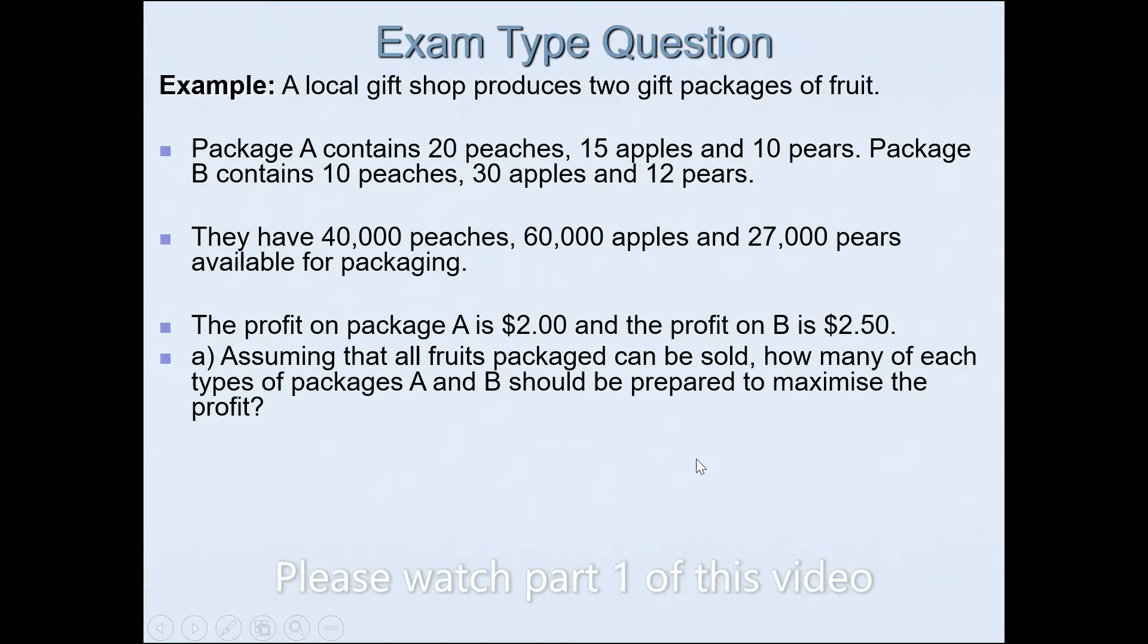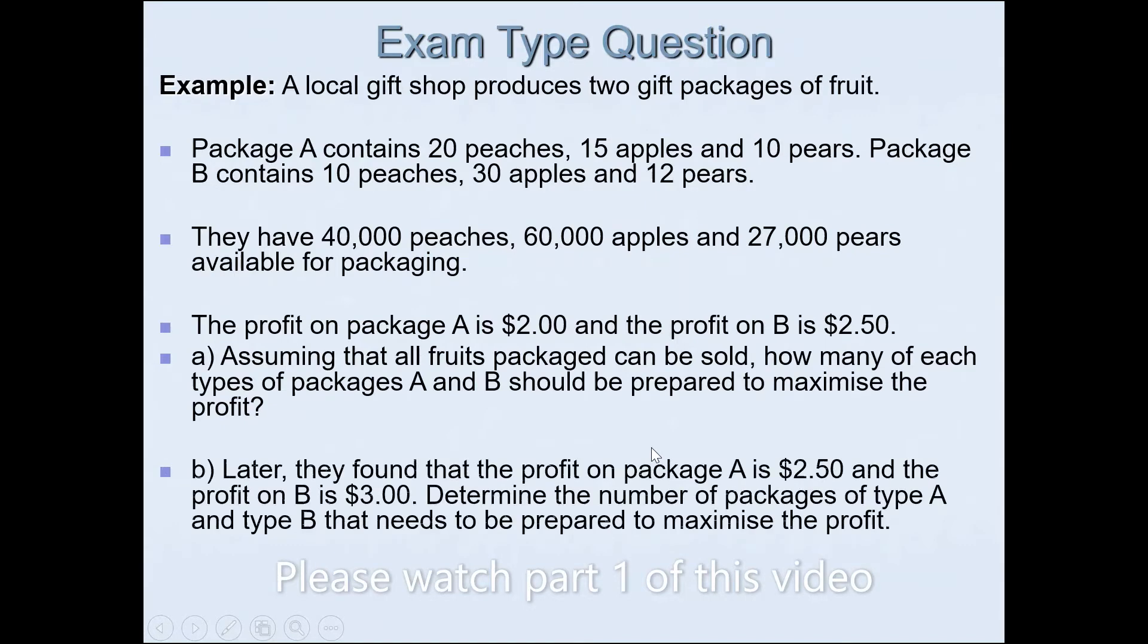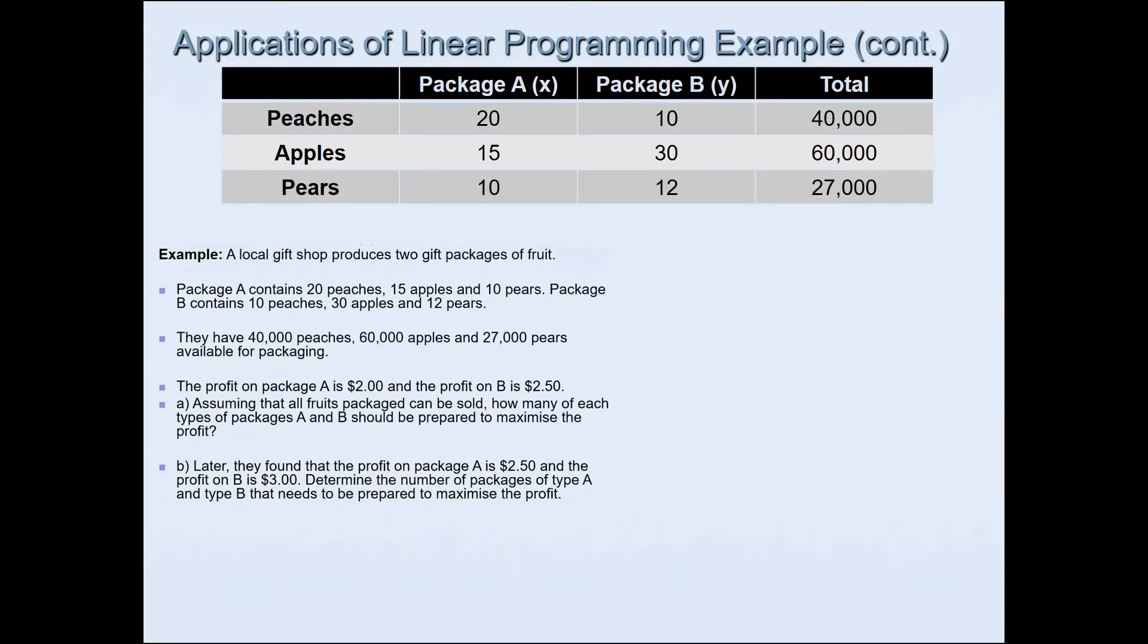What we will do in this video is look at the second part that leads to excellence. Later they found that the profit on package A is $2.50 instead of the initial estimation of $2, and the profit on package B is $3 instead of $2.50. Determine the number of packages of type A and type B that needs to be prepared in order to maximize the profit. There are different ways to answer this question, but I'll show you how we can use the concept of gradient.